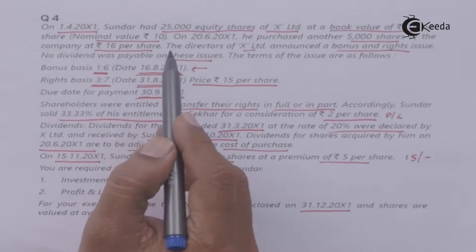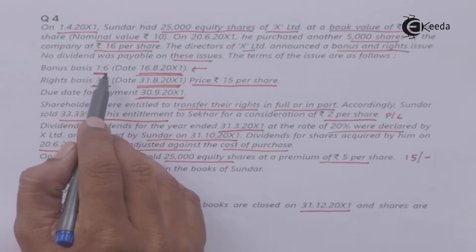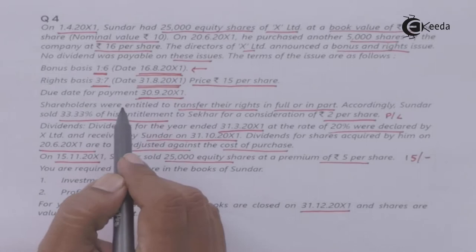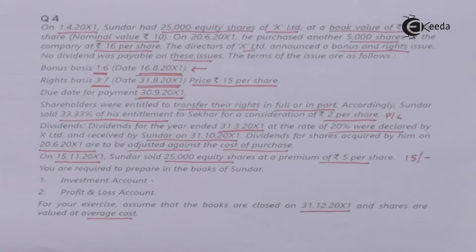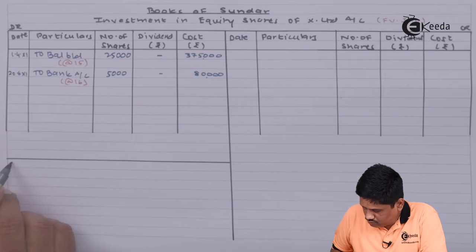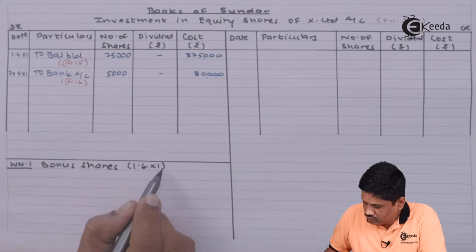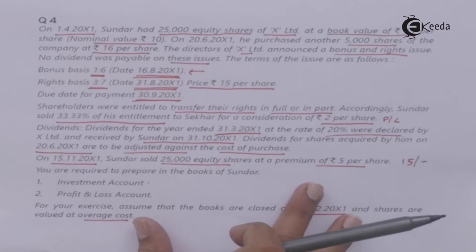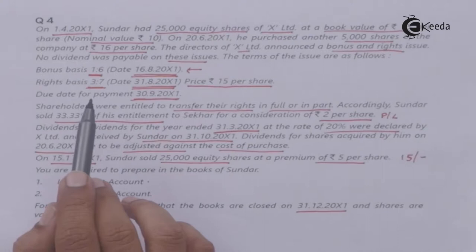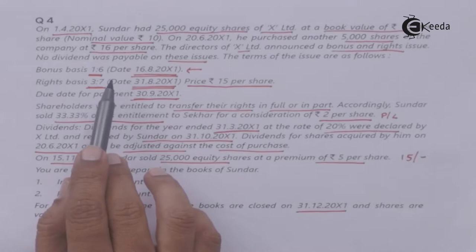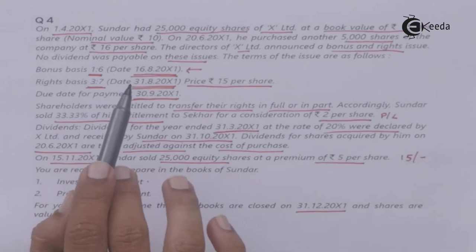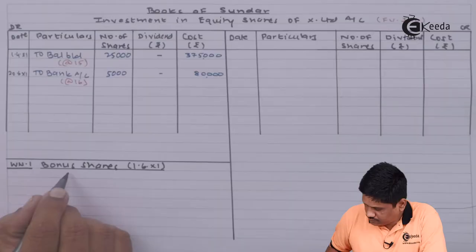The directors of X Limited announced bonus and right issue — no dividend payable on these issues. The terms: bonus basis 1:6, date 16th August 2001. The ratio given is 1:6, meaning for every 6 shares held you get 1 bonus share. The larger digit (6) represents shares held and 1 represents the bonus. So for every 6 shares, you receive 1 bonus share.